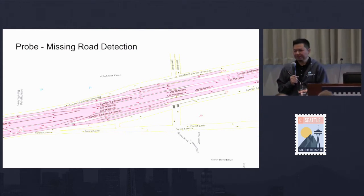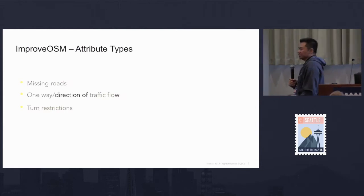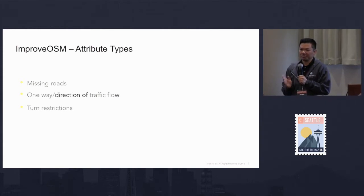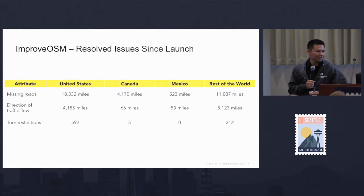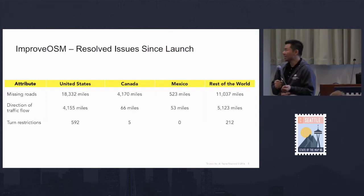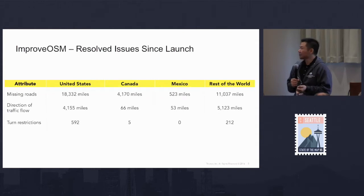So what else can you do with probe data other than missing roads? We found that we can also use the data to identify the direction of traffic flow - whether the road is a one-way or not - and also to identify turn restrictions. We came up with this tool called Improve OSM and we launched it back in November. Since then, we were able to add thousands of missing roads, direction of traffic flow, and also hundreds of turn restrictions.